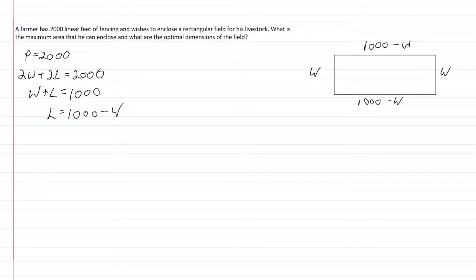What we're actually looking for is the maximum area. Area is length times width, and we just found L is 1,000 minus W. So our area is going to be 1,000 minus W times W, which becomes 1,000W minus W squared when we distribute.